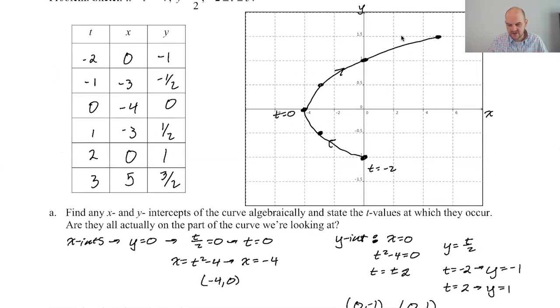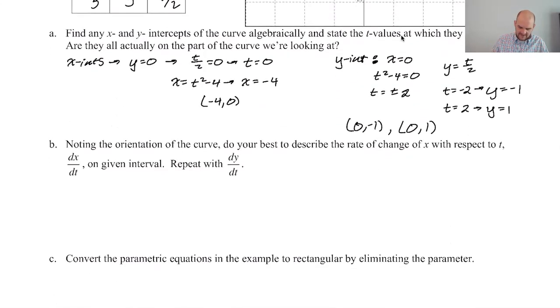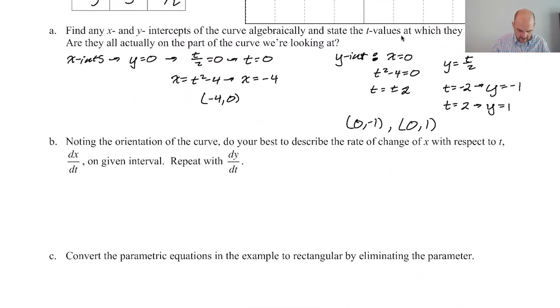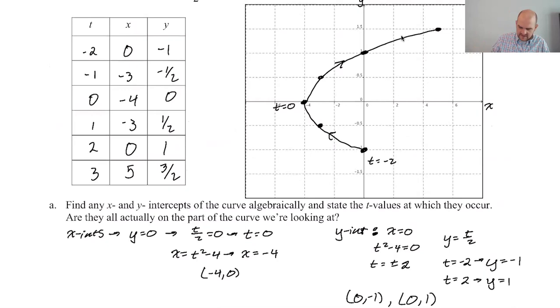So algebraically, you can solve these things. I mean, we already knew them, so maybe we should just dive in with that. Noting the orientation of the curve, do your best to describe the rate of change of x with respect to t, which is dx dt, and the rate of change of y with respect to t, which is dy dt. So we have a lot of derivatives for parametrics. We have x can change with time, so dx dt. y can change with time, so dy dt. And then y can change with respect to x, so we have dy dx. And then we also have concavity, so we have a second derivative, d squared y dx squared.